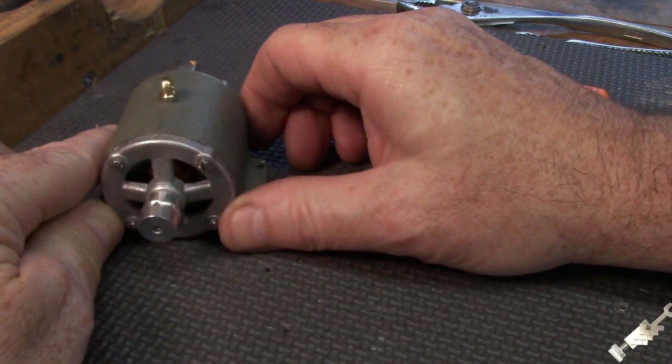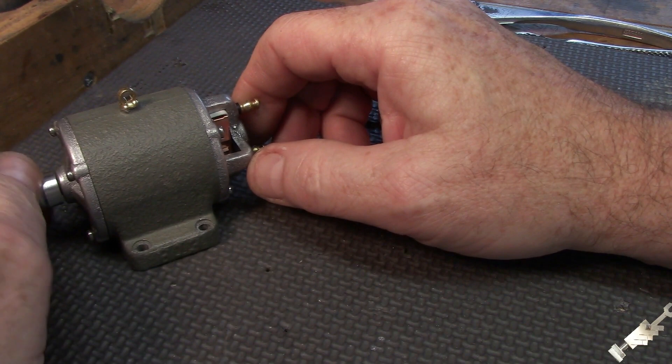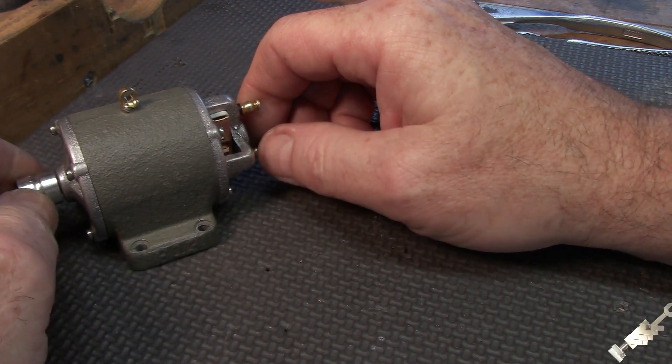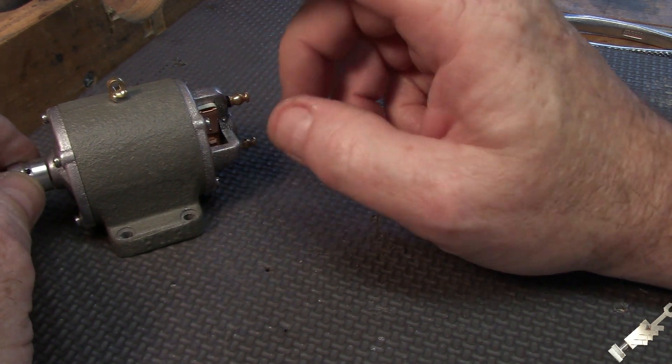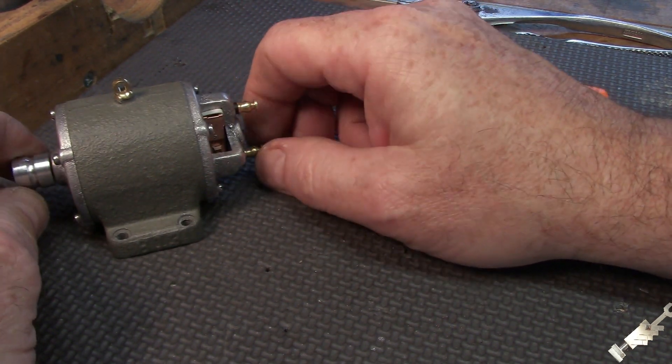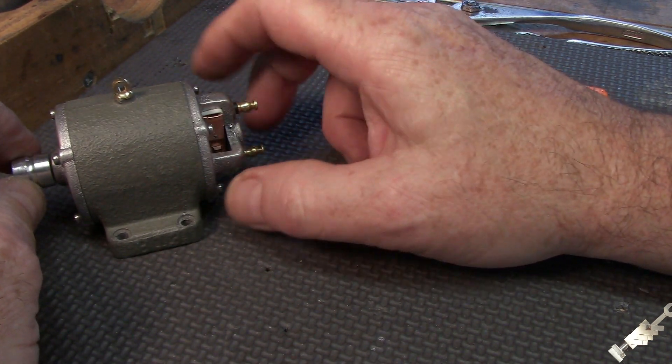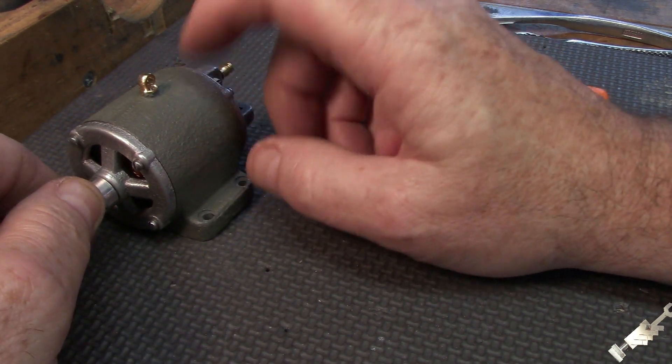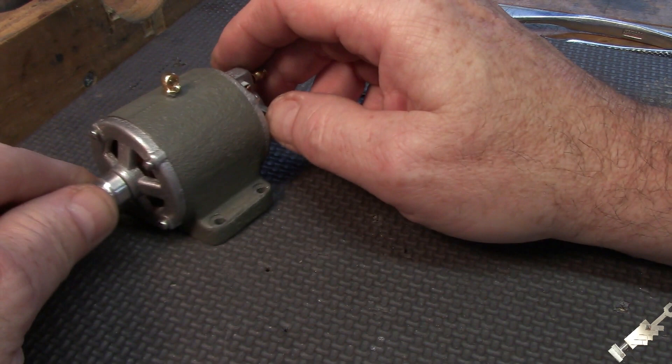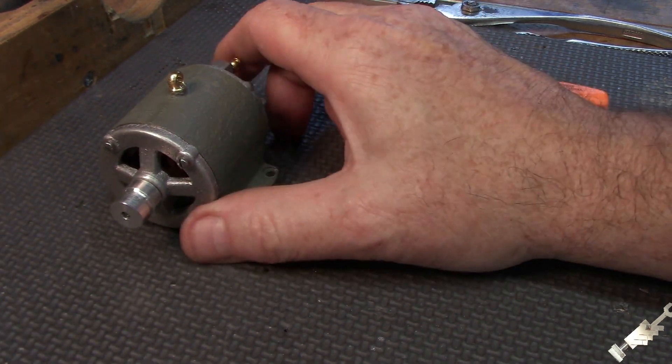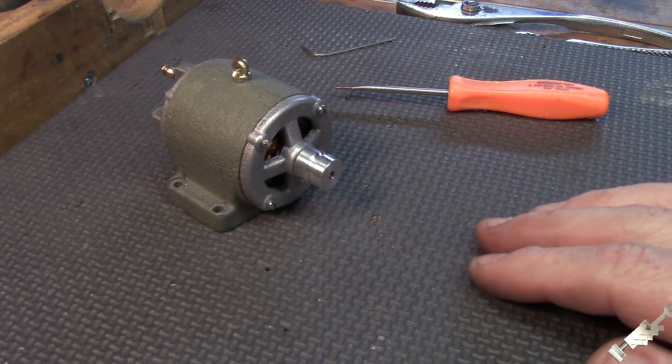Alright, so this little guy is done here. Next step is we'll get it mounted on the board and hooked up to the steam engine and make a lamp for it. So alright, we're getting there.